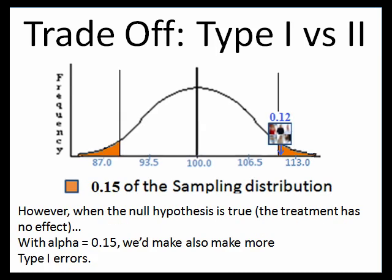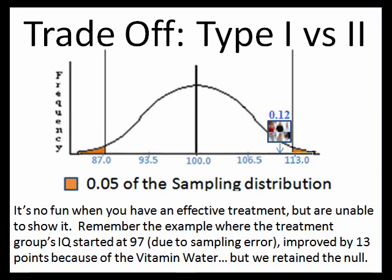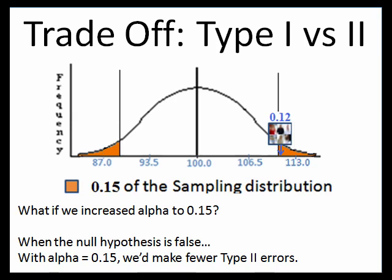If your alpha is 0.05 and you increase it to 0.15, you're going to make fewer Type 2 errors — it will be easier to reject the null hypothesis, so if you have an actual treatment it's going to be easier to show that your treatment was helpful. The flip side is that if the null hypothesis is correct and your treatment has no impact, just due to sampling error it will be easier to reject the null — you'll get a sample mean that extreme just due to chance 15% of the time. So when you increase alpha, you're increasing your Type 1 errors. If your alpha is 0.20, when the null hypothesis is correct you're going to incorrectly reject it 20% of the time. The bigger your alpha, the more often you make Type 1 errors, but also the easier it will be to show that your treatment has an impact if it truly does.